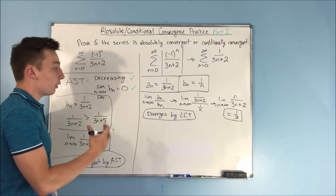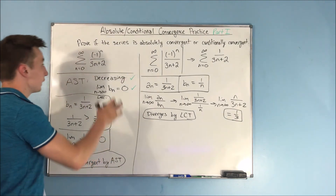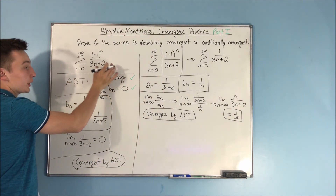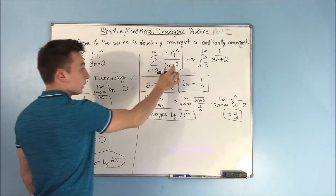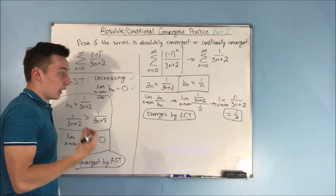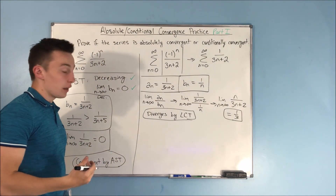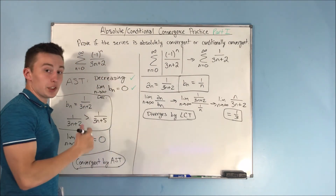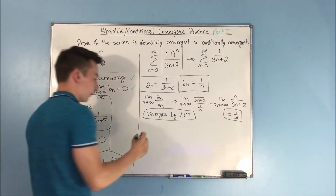Since the series is convergent but the absolute value of the series is not convergent, that tells us it is conditionally convergent.